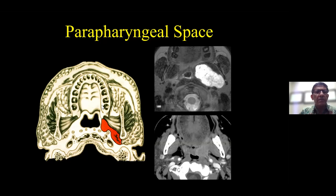Will it be wrong to call a masticator space lesion an infratemporal lesion? No — I use the terms masticator space and infratemporal interchangeably. What all spaces does the infratemporal fossa consist of? The infratemporal fossa is essentially the masticator space, as we discussed.